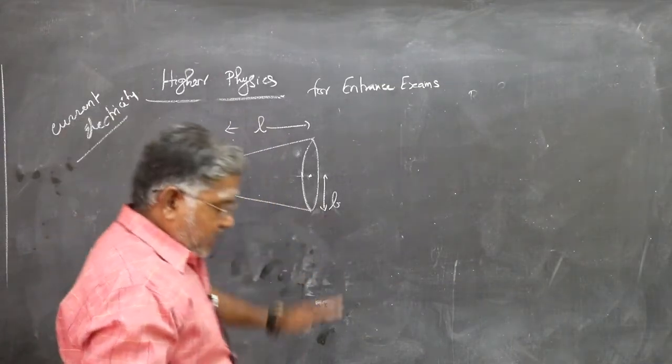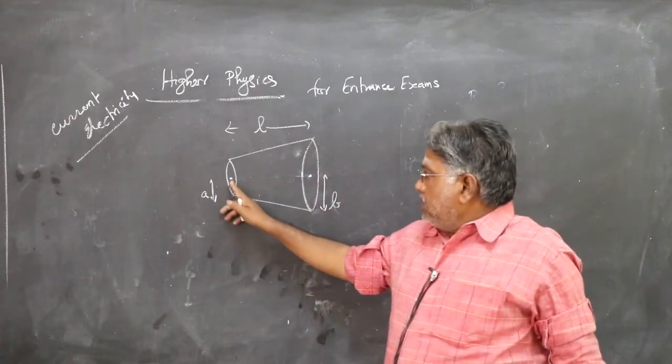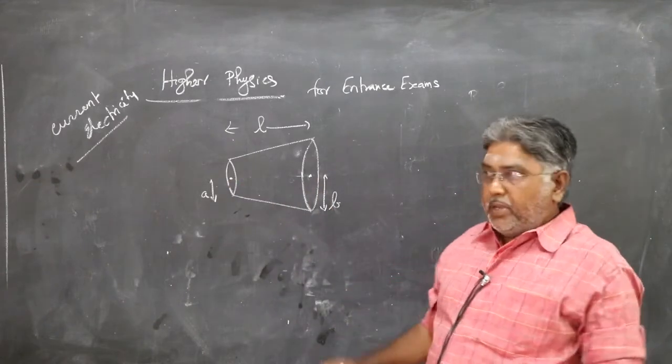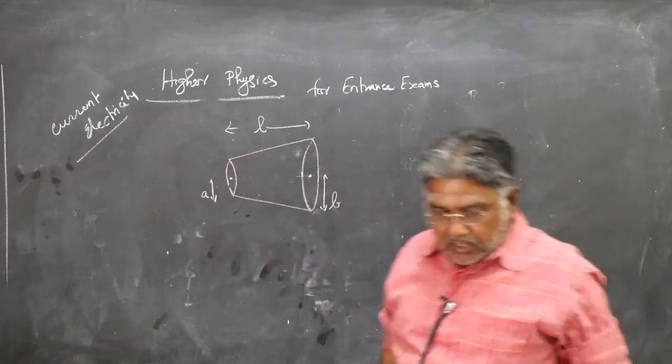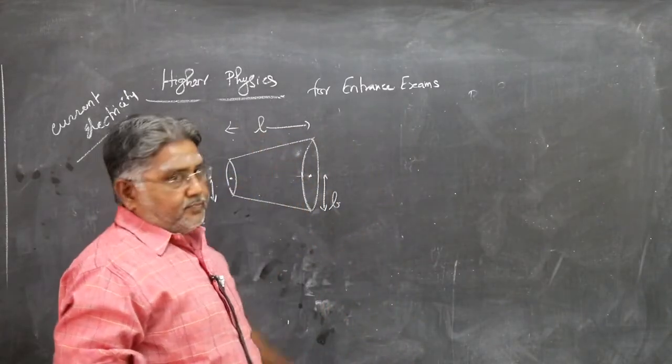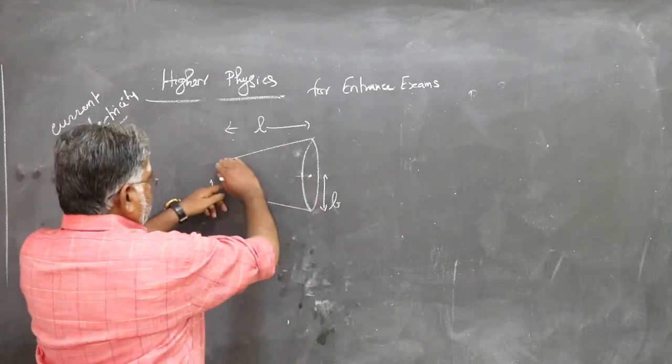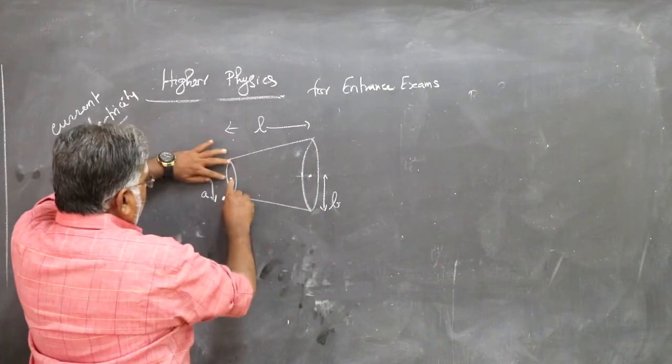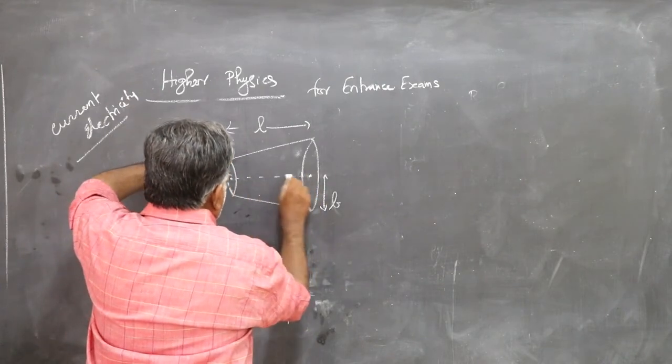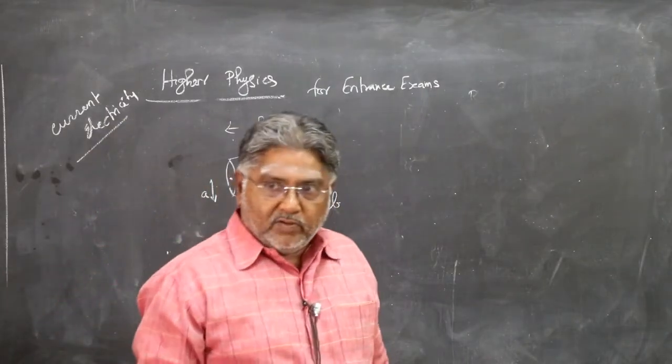So you are given a truncated solid cone. This side has got a radius A, the other side has got radius B. It is a right circular cone. Length is L. Length means not the slanting length, but the length all the way from here to here, center to center length is L.